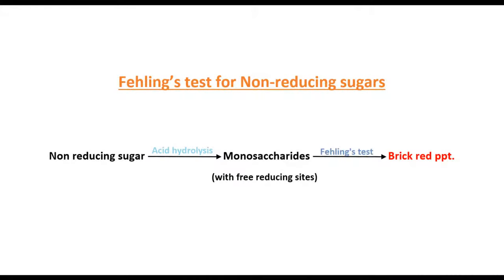Fehling's test can also be performed on non-reducing sugars. A solution of non-reducing sugars such as sucrose is first hydrolyzed with a dilute acid, which breaks them down to their constituent monosaccharides containing free reducing sites. Fehling's test is then performed as usual on the hydrolyzed sugar sample to yield positive color reactions.